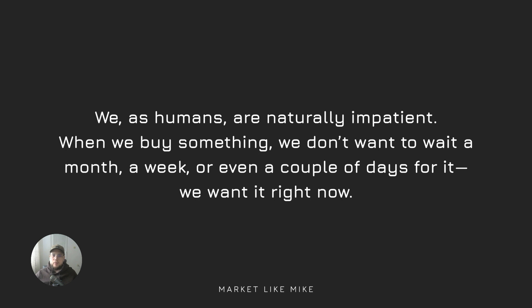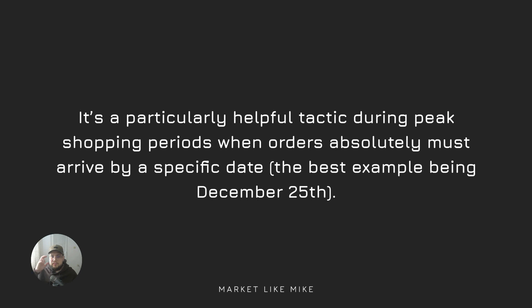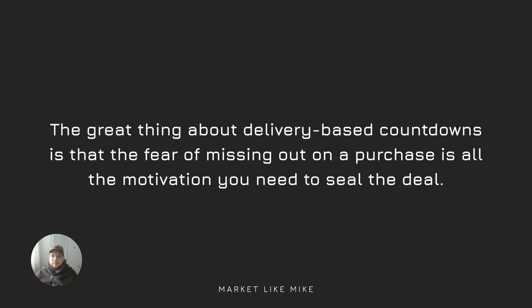The first instance is the so-called delivery-based countdown timers. As humans we are naturally impatient — when we buy something we don't want to wait a month, a week, even a couple of days; we want it right now. We also know that if we place an order at midnight it's not going to arrive the next day, so it makes a lot of sense to tell shoppers how long they have to take advantage of next-day delivery. This is particularly helpful during peak shopping season, for example Christmas, when orders absolutely must arrive by a specific date. The great thing about delivery-based countdowns is that the fear of missing out is all the motivation you need to seal the deal, which means you don't necessarily need to offer a discount — you can try this tactic before you throw another discount code at them.